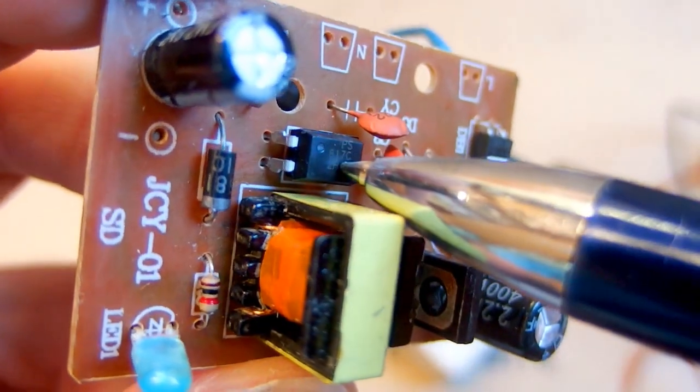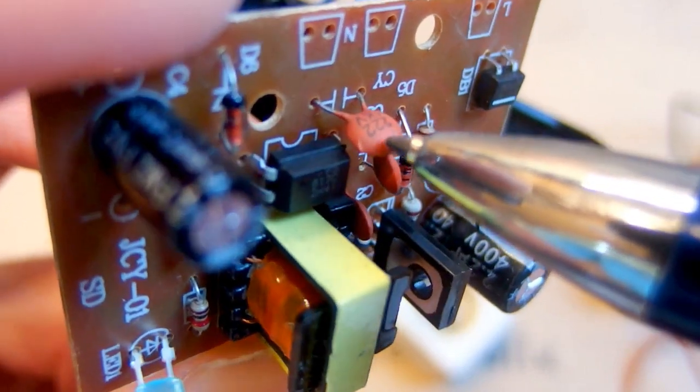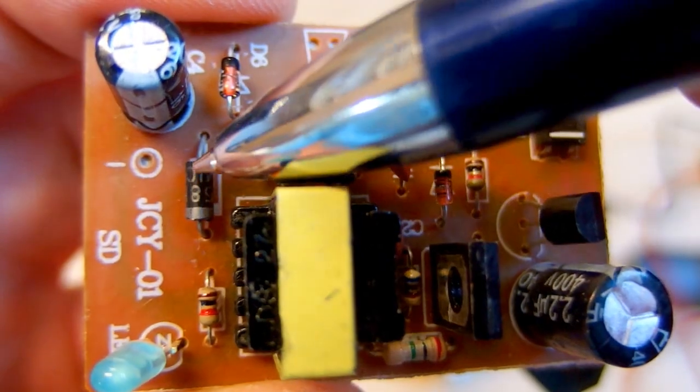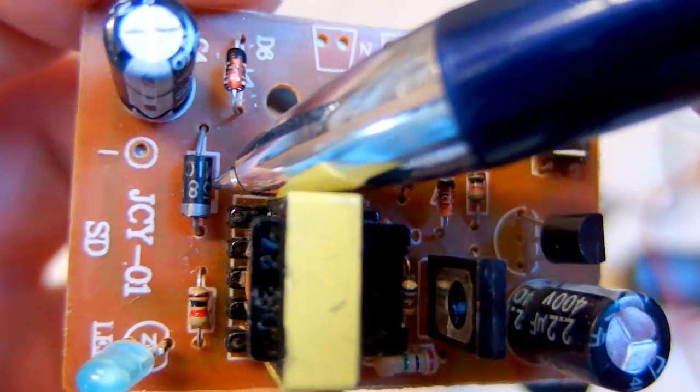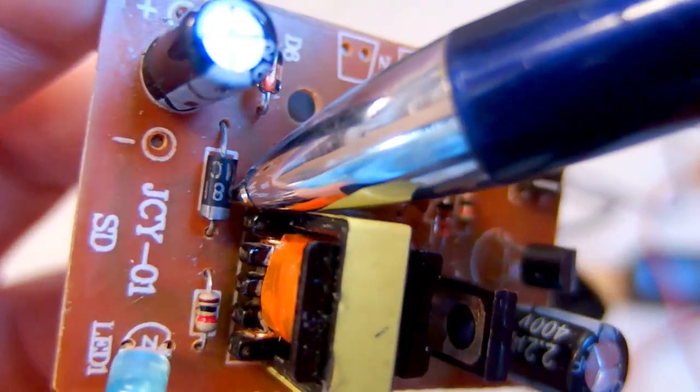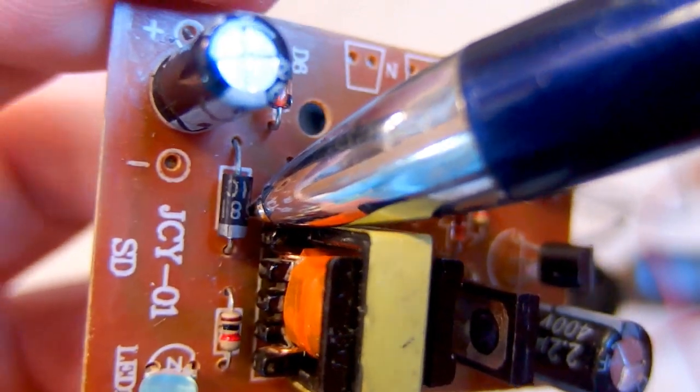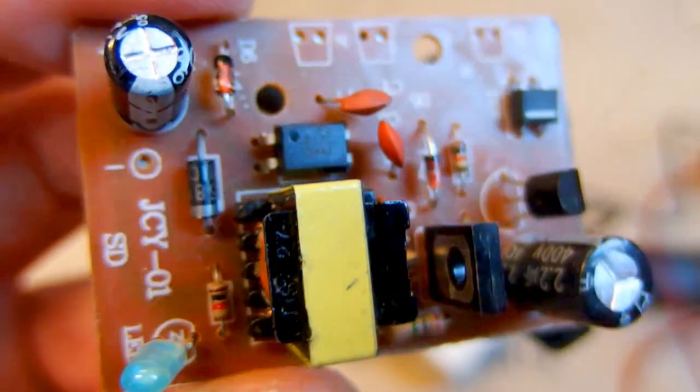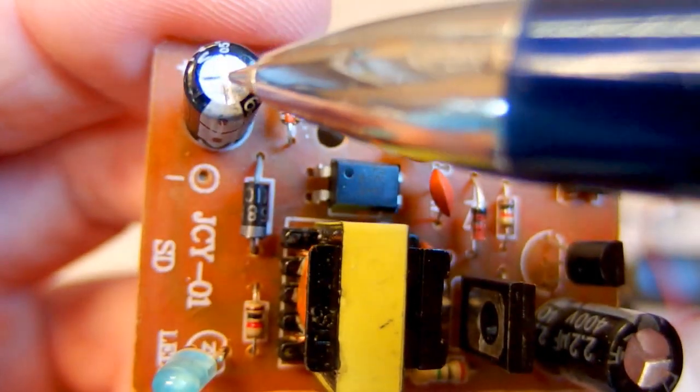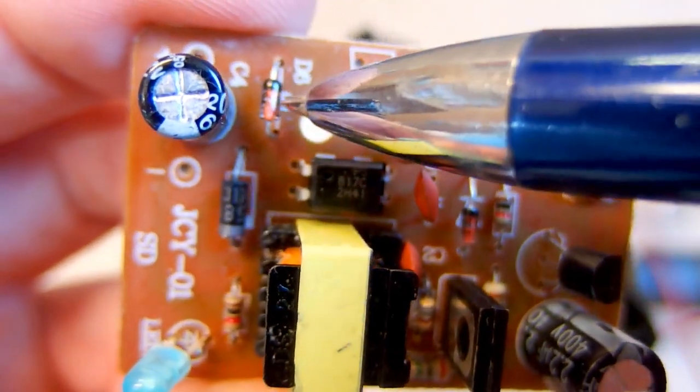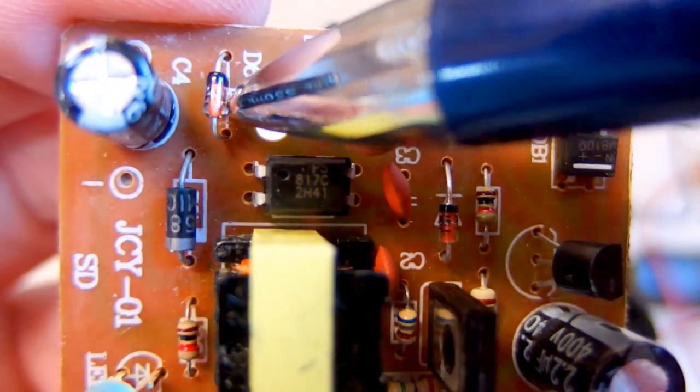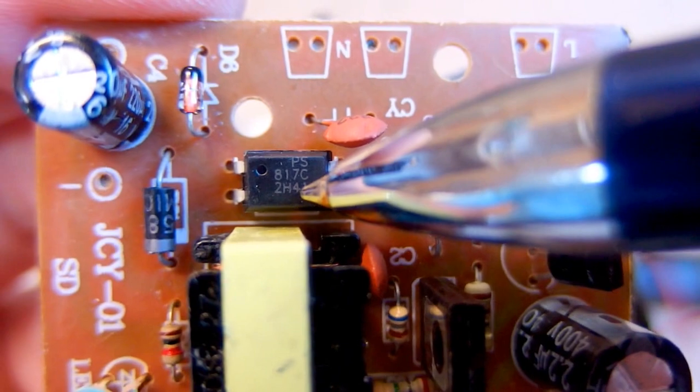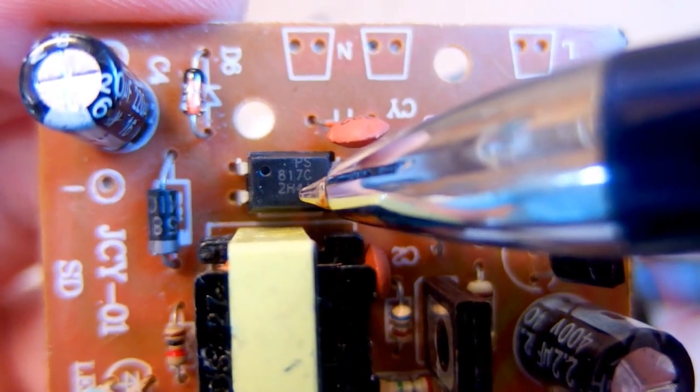Here you can see the switching transformer. The optocoupler. Some very dodgy interference capacitor. This is the secondary rectifying diode. Probably a Schottky diode, which is very fast and has a low voltage drop. And here is the series resistor of the LED. The output capacitor and some zener for regulation. In series with the LED in the optocoupler. So there is no voltage reference like 431.